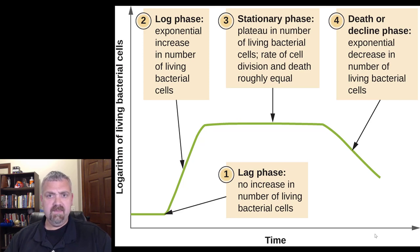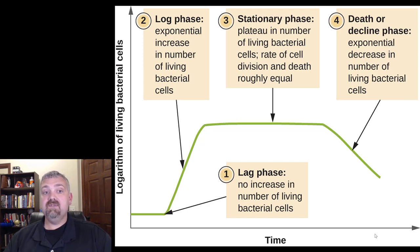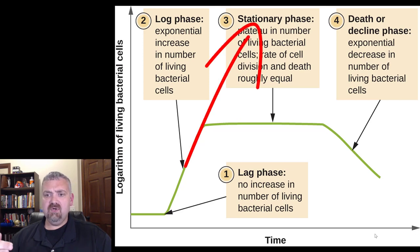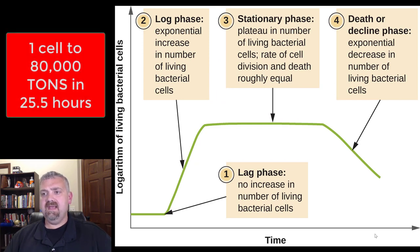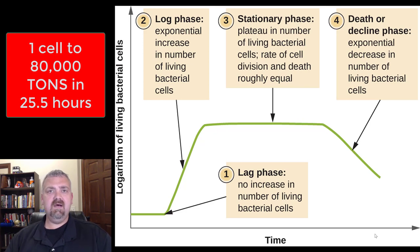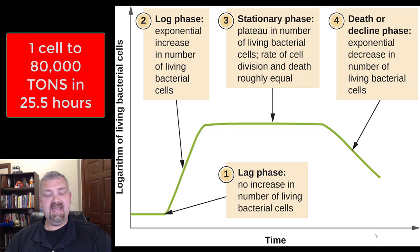Others are going to be much longer. The log phase is when cells are actively doubling and increasing in number. If this were to continue forever, we would see an unbelievable number of bacteria. If you take a single cell with a generation time of 20 minutes, in 25.5 hours that cell could become a pile of bacteria that weighs 80,000 tons.